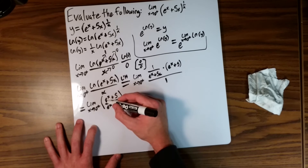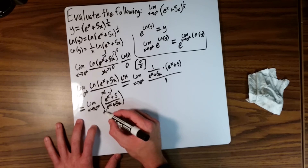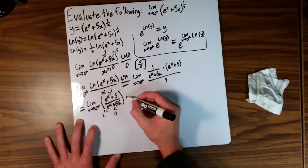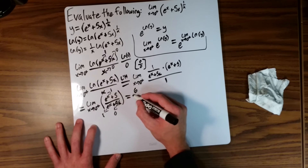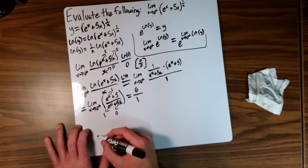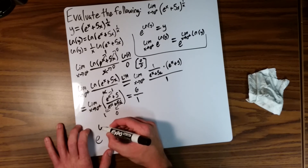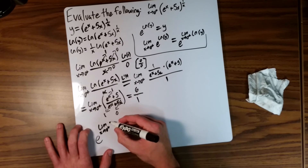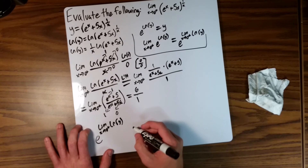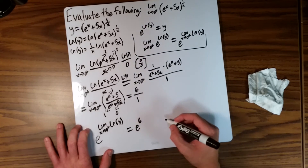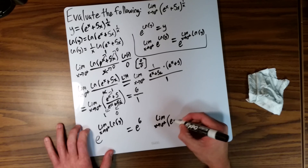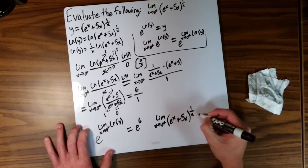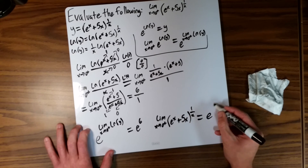As x approaches 0 from the right, e to the x approaches 1 and 5x approaches 0, so the numerator approaches 1 plus 5 equals 6, and the denominator approaches 1. So the limit equals 6 over 1, which is 6. Coming back, the answer is e to the limit of the natural log of y, which equals e to the 6. So the limit as x approaches 0 from the right of e to the x plus 5x, all to the 1 over x power, equals e to the 6.